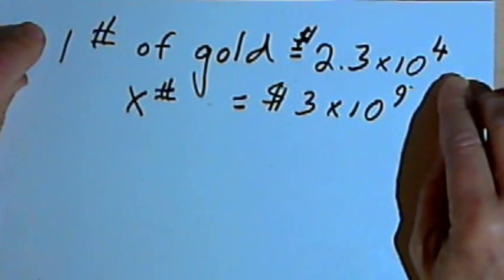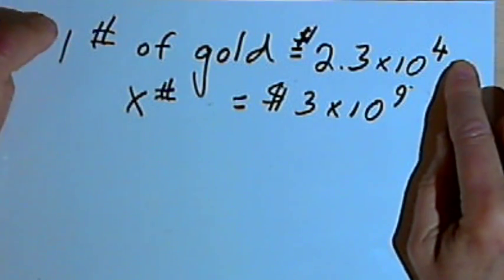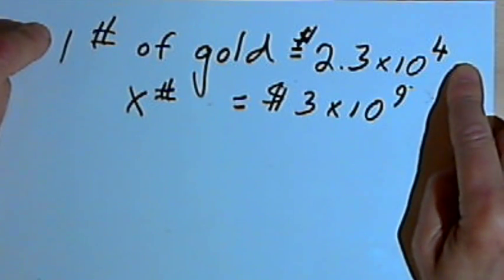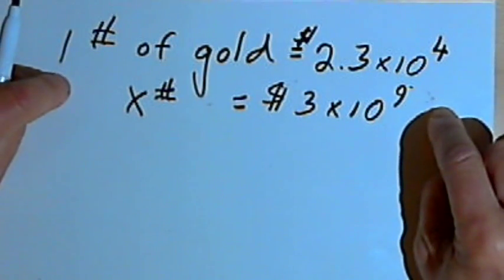And if I take any equation and I take the numerator, I take the left side of the equation and call that a numerator, and the right side and call it a denominator, that fraction that results is going to be equal to 1, because I've got the same thing in the numerator and the denominator. So let's make two fractions.